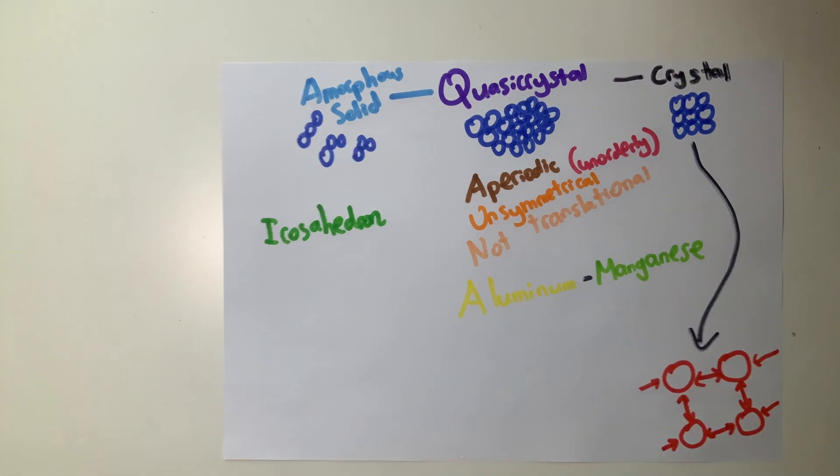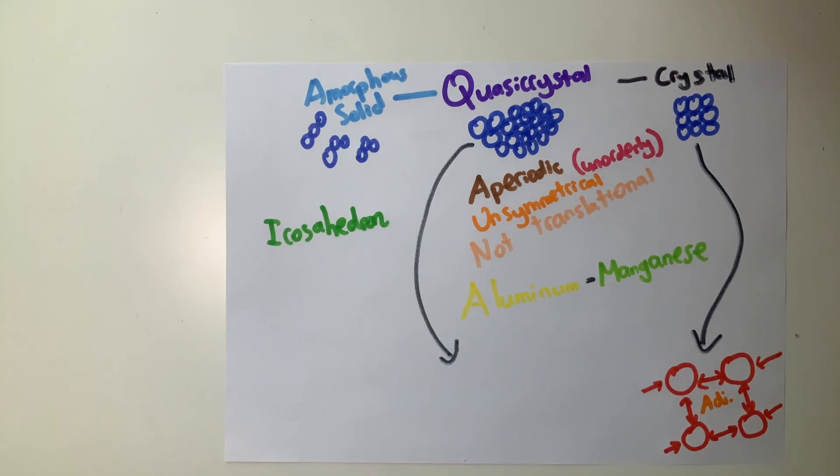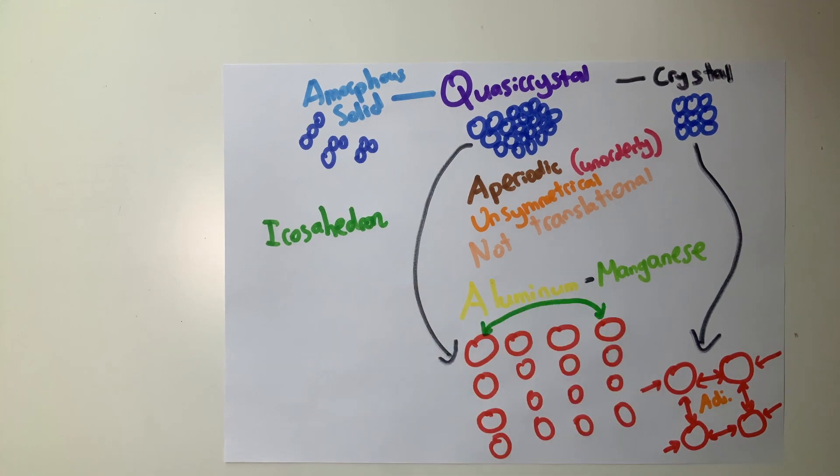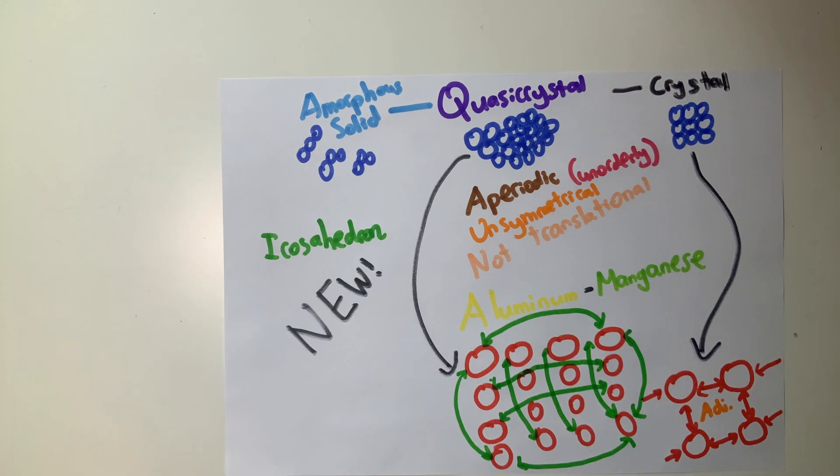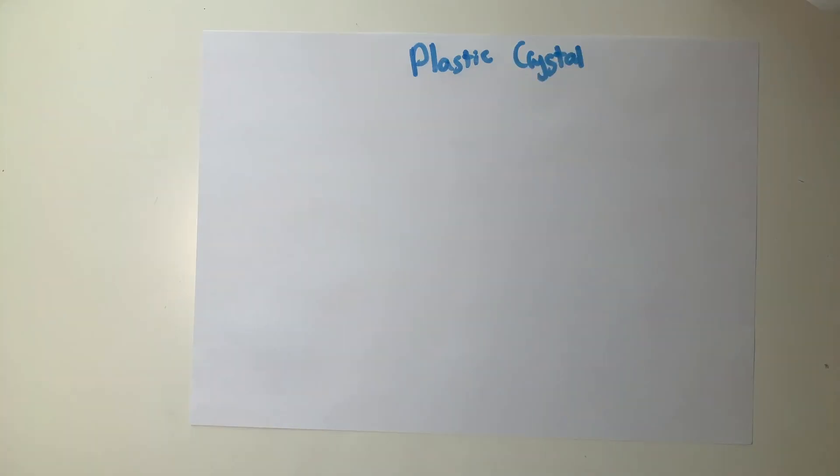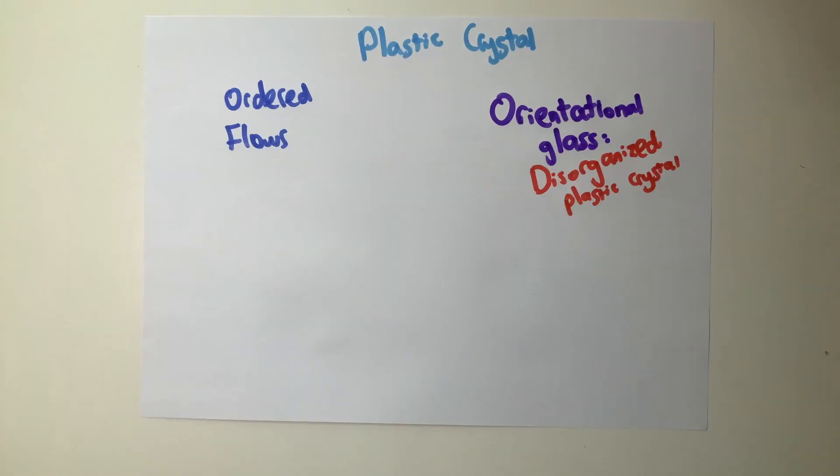Instead of each atom interacting with adjacent atoms like in regular crystals, atoms interact with others three atoms away. Plastic crystals contain atoms of crystalline order that can move around to some extent. Plastic crystals that move around in a disorganized way are known as orientational glass.